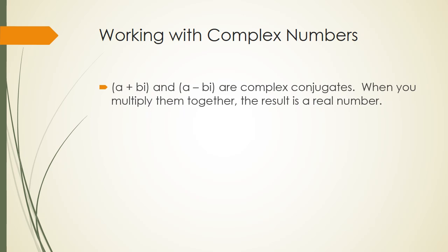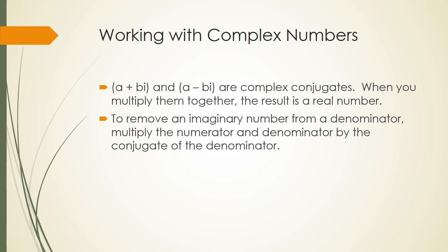Okay, this is talking about what we just looked at. a plus bi and a minus bi are called complex conjugates. Whenever you multiply them together, the result is a real number, as we just saw in that last example. In order to remove an imaginary number from a denominator, we're going to multiply the numerator and denominator by the conjugate of the denominator. This is exactly what we do with square roots. And since i is the square root of negative one, we're really just following that rule that we don't want to leave a square root in the denominator.